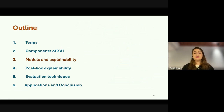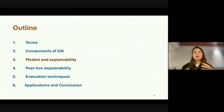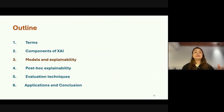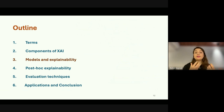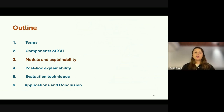Before switching to the third section, I want to briefly mention that we can group explanation methods into two categories. The first is ante-hoc explainability, which is explainability of the models themselves. The second group is post-hoc explainability — these are the explanations generated after decisions are made, after the model is trained — not built into the model.